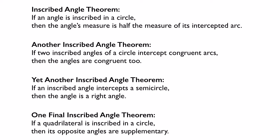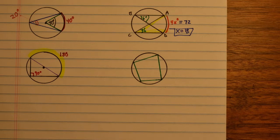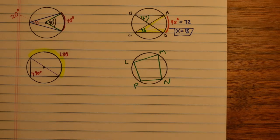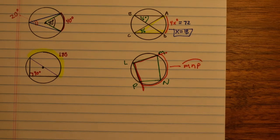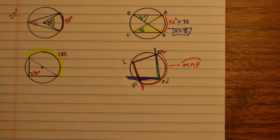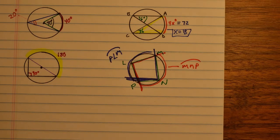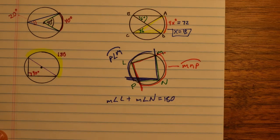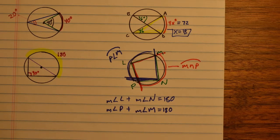Our last theorem dealing with inscribed angles: if we have a quadrilateral inscribed in a circle, then opposite angles are supplementary. The quadrilateral is drawn entirely in the circle with vertices on the circle. Calling it LMNP, angle L intercepts arc MNP, and angle N intercepts arc PLM. Those two arcs make one full circle, so angle L and angle N must sum to 180. Similarly, angle P and angle M also add up to 180.